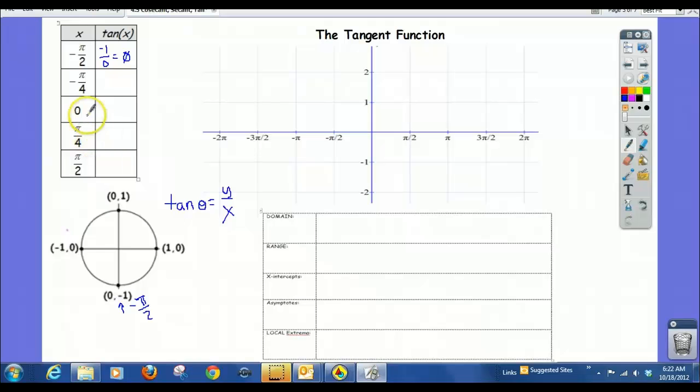And let's do an easy one, 0. 0 is here, y over x is 0 over 1, which is just 0. And at pi over 2, pi over 2 would be here. Tangent is 1 over 0 again, which is undefined.